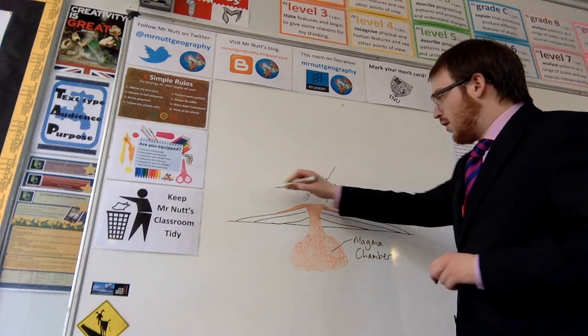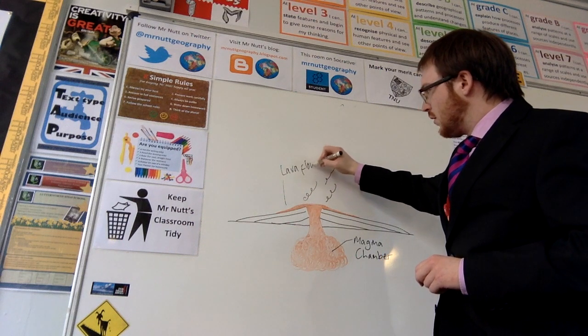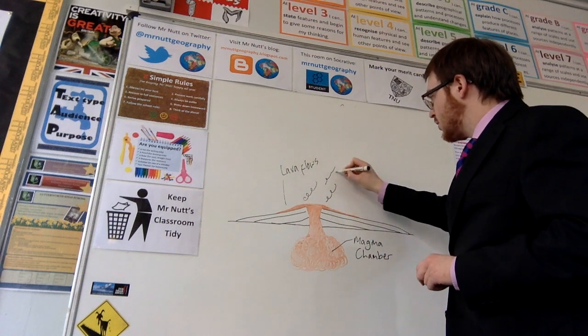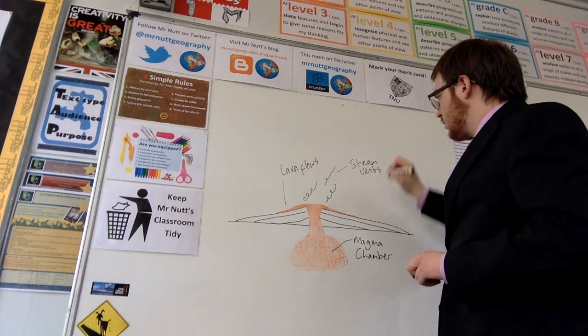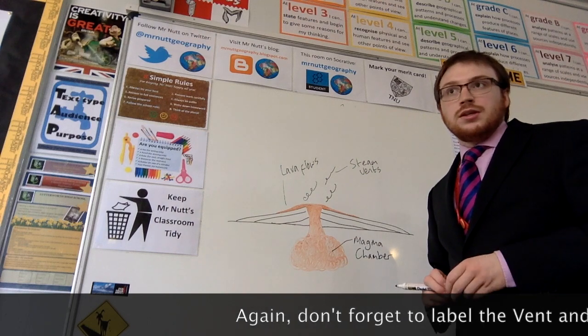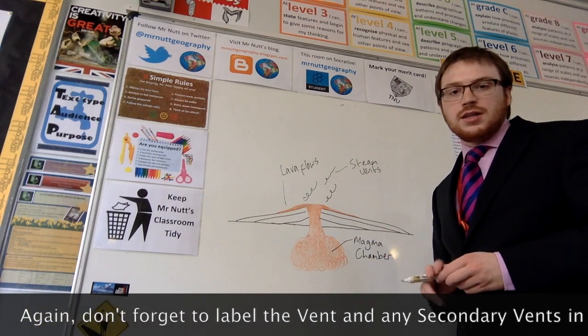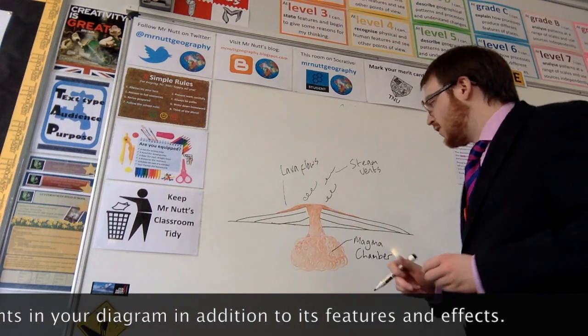So what we've got then on our diagram, we've got lava flows. We've got, perhaps, steam vents. Such as those at Geysir in Iceland, Yellowstone National Park, there's steam vents there that release just steam, nothing more than superheated water into the atmosphere.